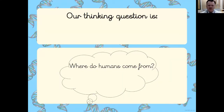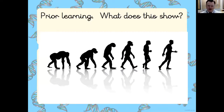We're going to start with this thinking question: where do humans come from? See if you can answer that. Then have a look at this image — what does it show? It's not an actual picture, it's a drawing, a diagram, a representation. It might show something over time.